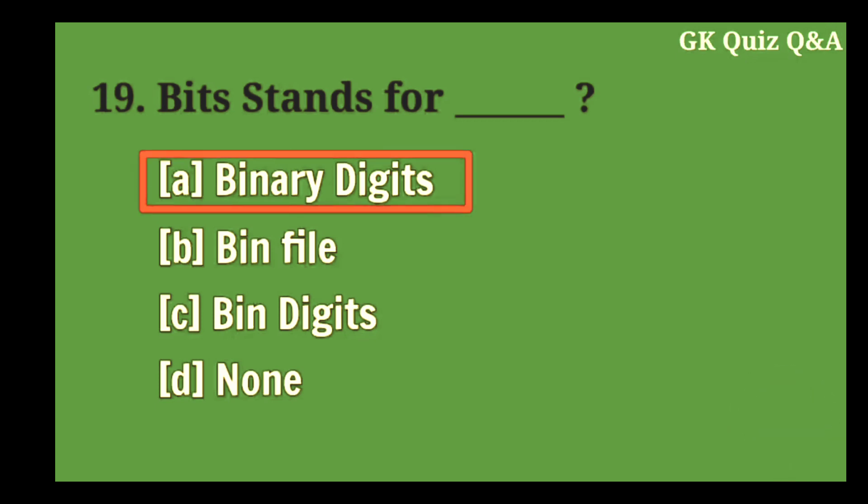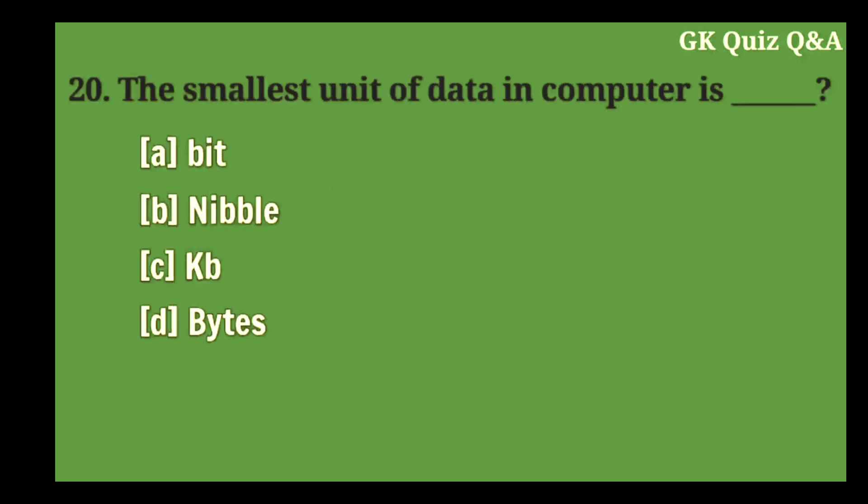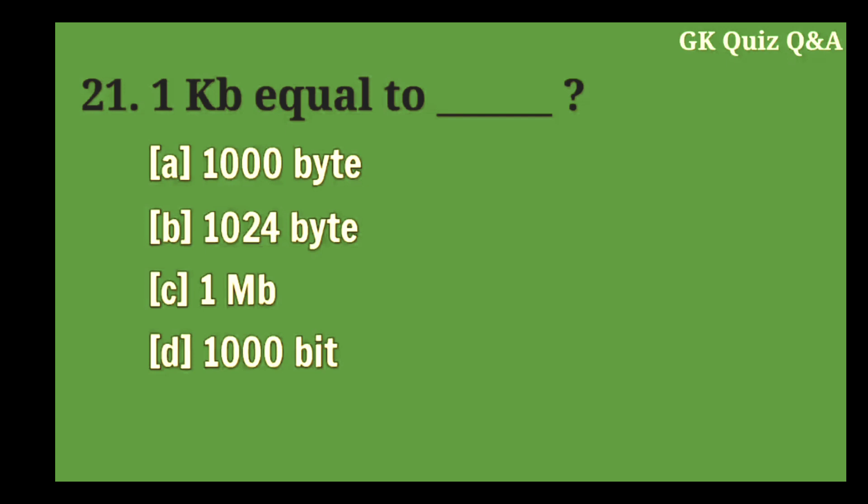Answer A: Binary digits. The smallest unit of data in computer is? Answer A: Bit. One KB equal to?